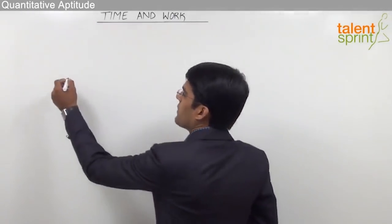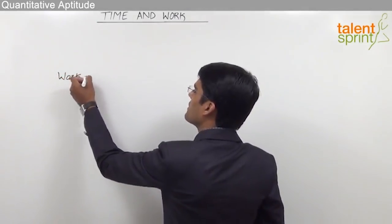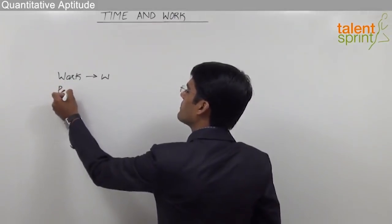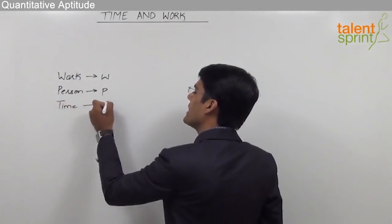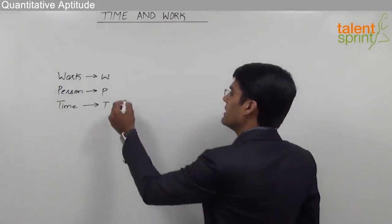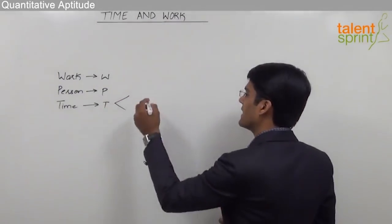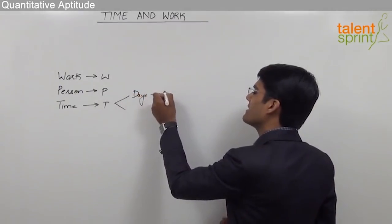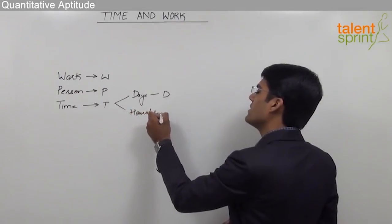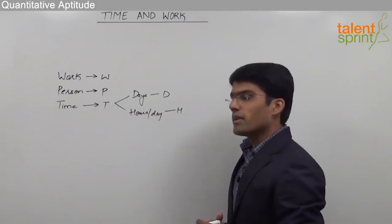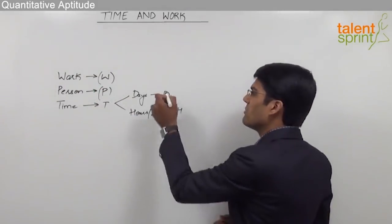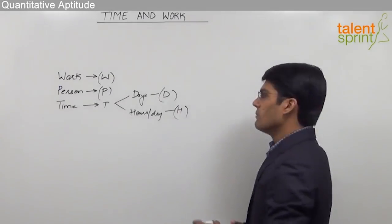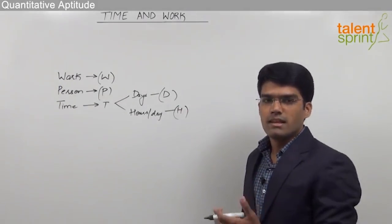Here we need to consider three important variables. The first is work, generally denoted by W. The second is the number of persons, denoted by P. The third is time, denoted by T. Time can be further classified into number of days D and number of hours per day H. So the variables are W, P, D, and H, where D and H are both units of time.